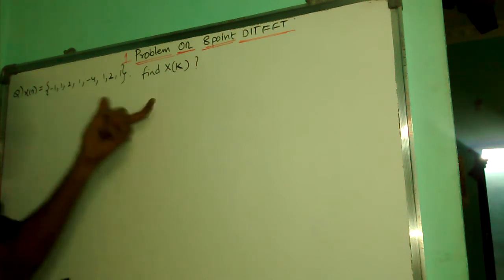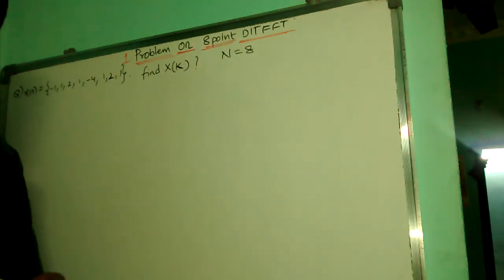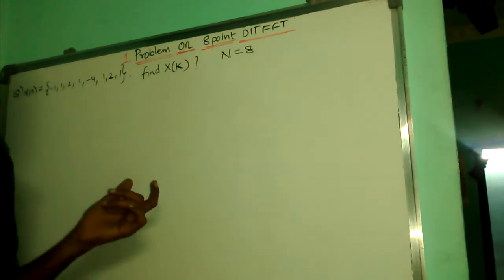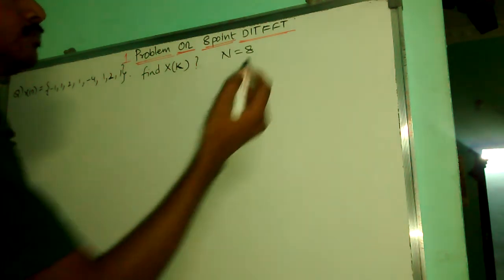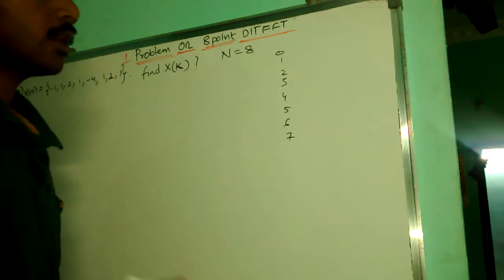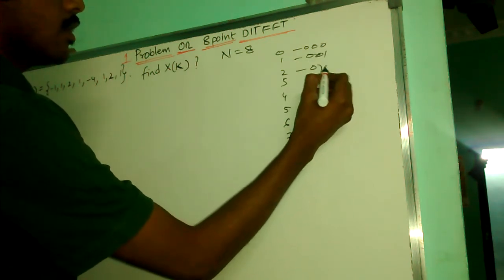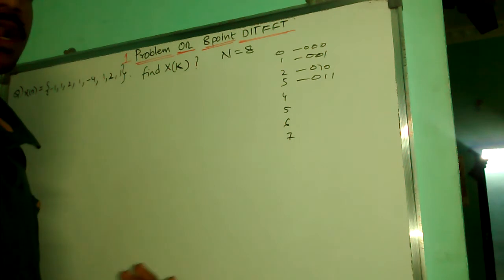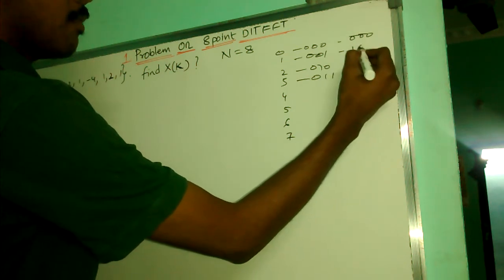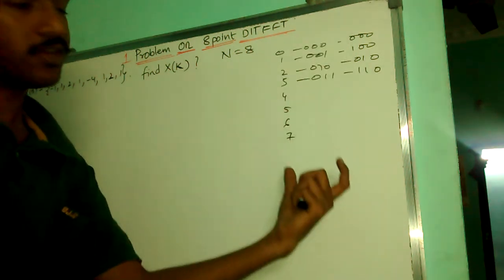The first property of FFT tells us to write down whatever samples are given in bit-reversal order. Suppose we have samples 0, 1, 2, 3, 4, 5, 6, 7 — these are my eight samples — and their equivalent binary representations. What you do is reverse the bits: for example, this remains the same, this becomes 1-0-0-0, and so on for all eight samples.